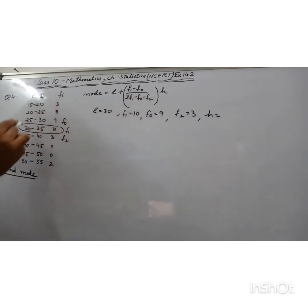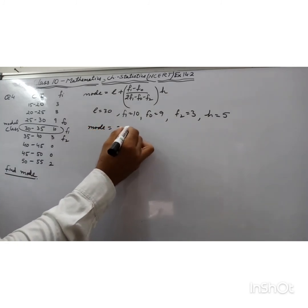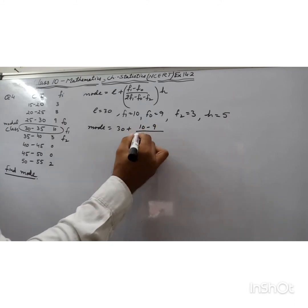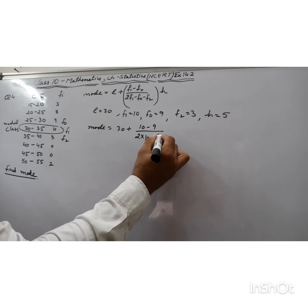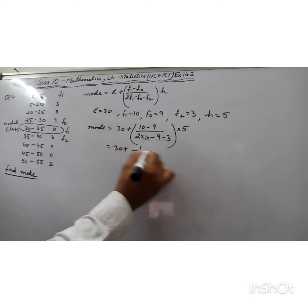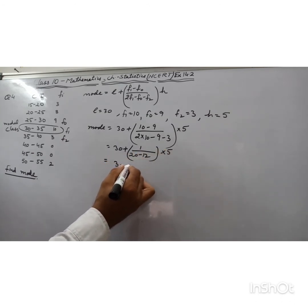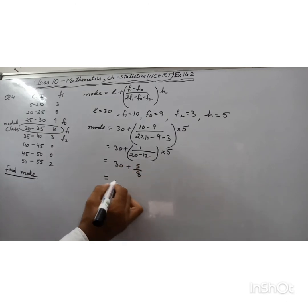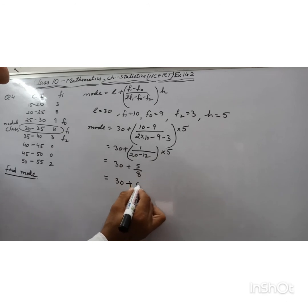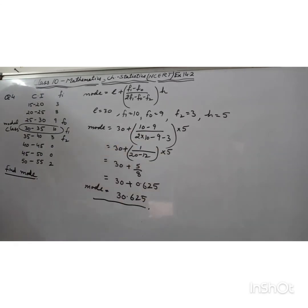The size of each class interval is 5, so h = 5. Mode = 30 + [(10 - 9) / (2 × 10 - 9 - 3)] × 5 = 30 + [1 / (20 - 12)] × 5 = 30 + (1/8) × 5 = 30 + 5/8. Dividing 5 by 8, we get 0.625. So mode = 30.625. Thank you.